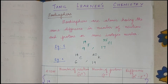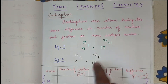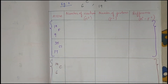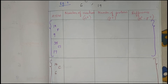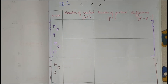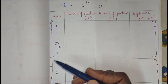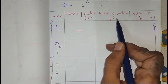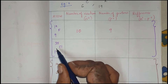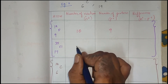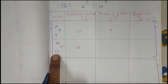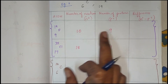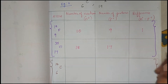We will see Example 1. The first example is 9-Fluorine-19 and 17-Chlorine-35. We will look at the number of protons and neutrons. For Fluorine: neutrons minus protons gives 10 minus 9, which is 1. For Chlorine: 18 minus 17, which is also 1.